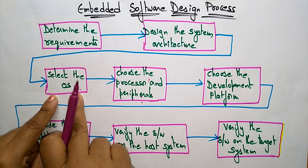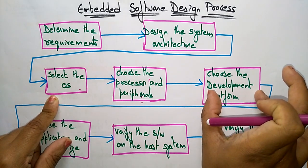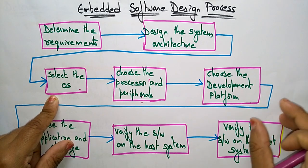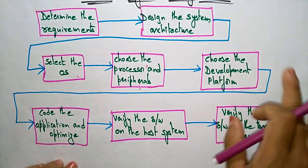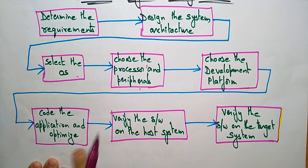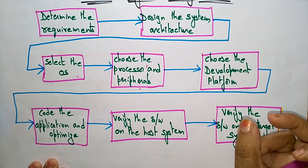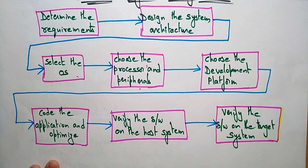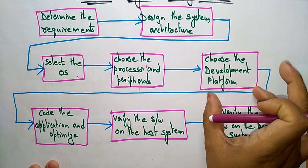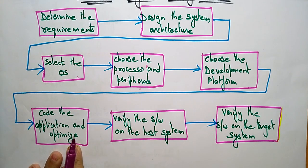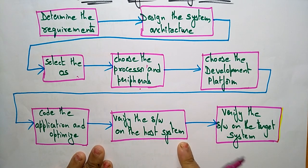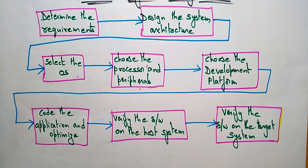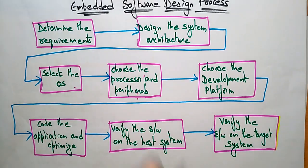Next, the fifth step is to choose a development platform — selecting the operating system is working on that system, whereas choosing the development platform means writing the code for your embedded system. After that, the sixth step is to code the application and optimize. Finally, the seventh and eighth steps are to verify the software on the host system and verify the software on the target system.